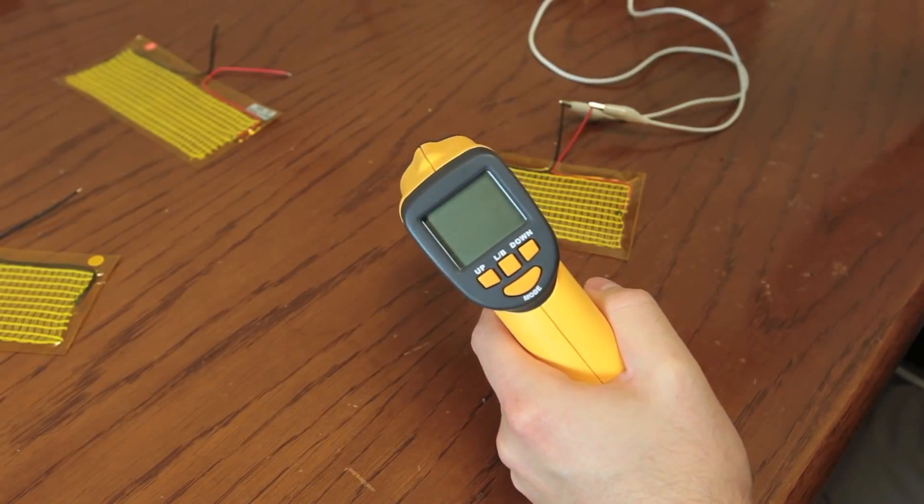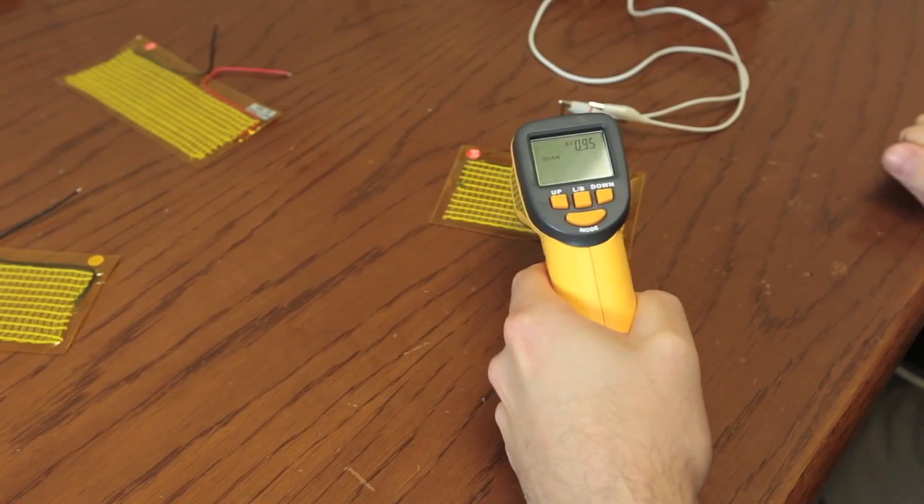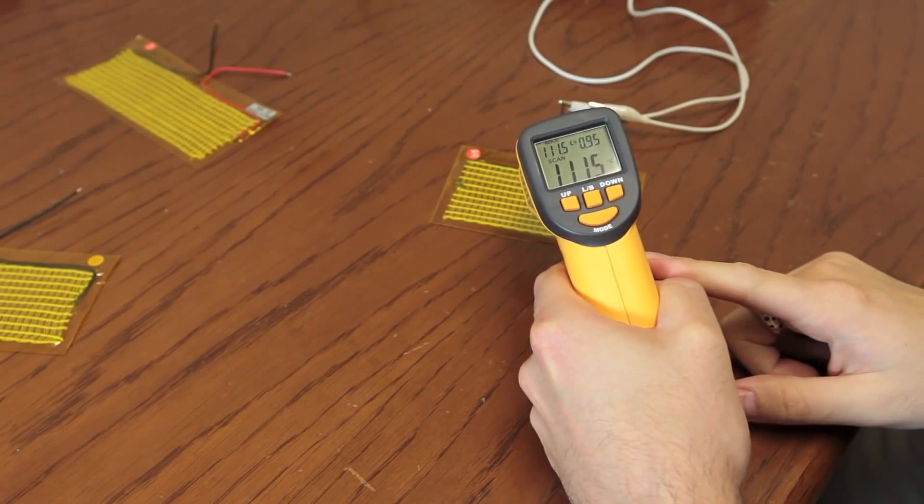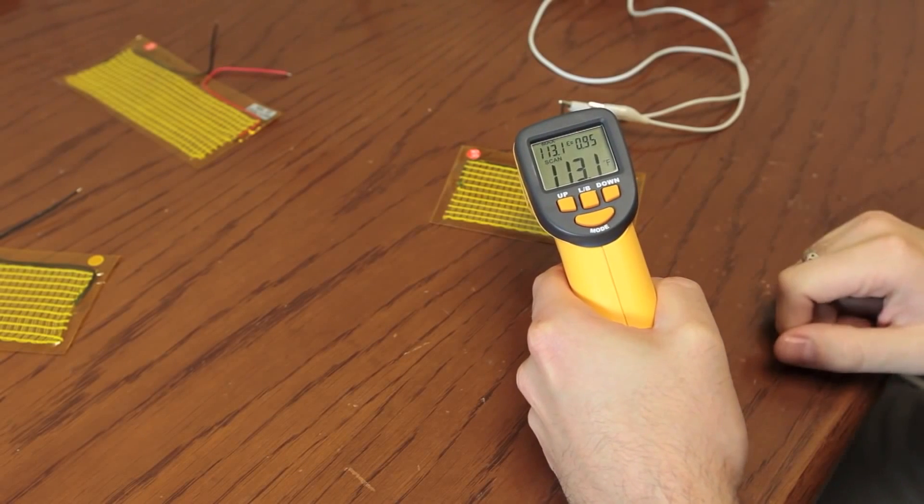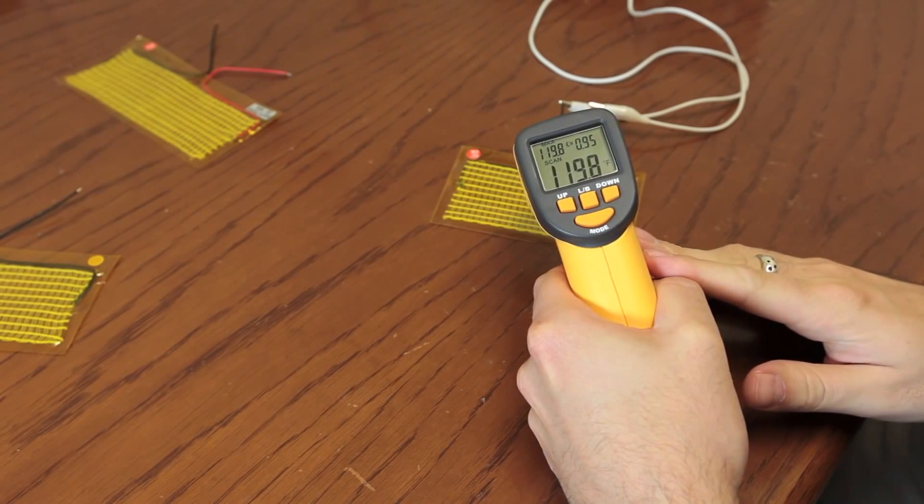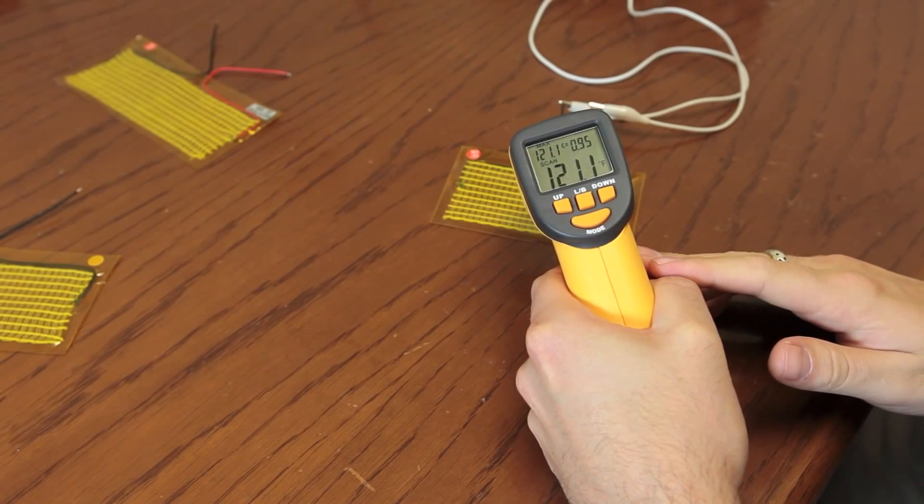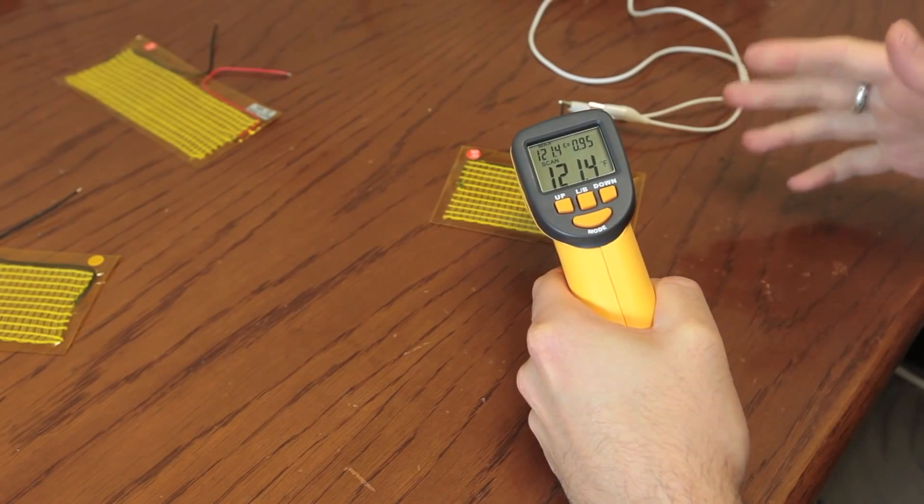You're probably wondering what happens if we increase the voltage. Well, let's have a look at this. We're at 112, 113, something like that. Let's go up to 6 volts. You can see 119, something around there, 120. So it definitely goes up.